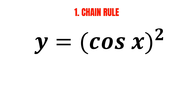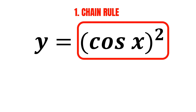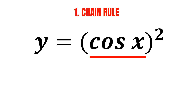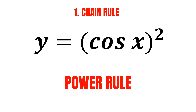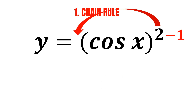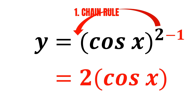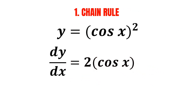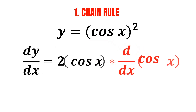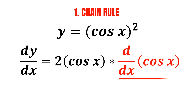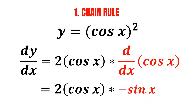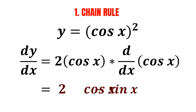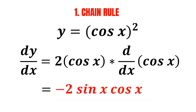By using the chain rule, we first take the derivative of the outer function without changing the inner function. In this case, we can apply the power rule, bringing the exponent down and reducing the exponent by 1, giving us 2 multiplied by cosine of x. Then we multiply by the derivative of the inner function, which is the derivative of cosine of x. We know that the derivative of cosine x is negative sine x, so we end up with negative 2 multiplied by sine of x multiplied by cosine of x — and we've found the derivative of cosine squared x.